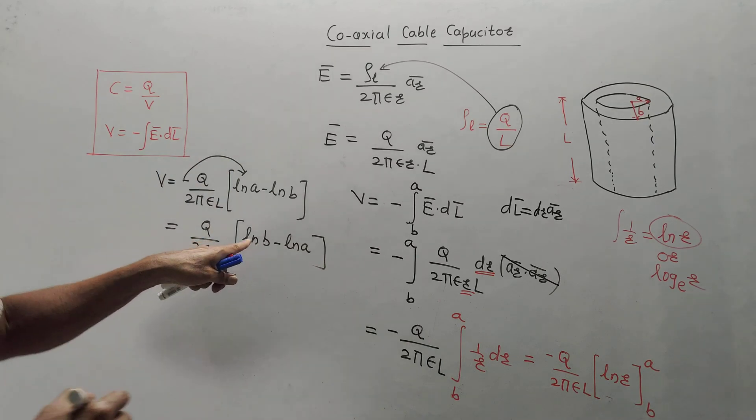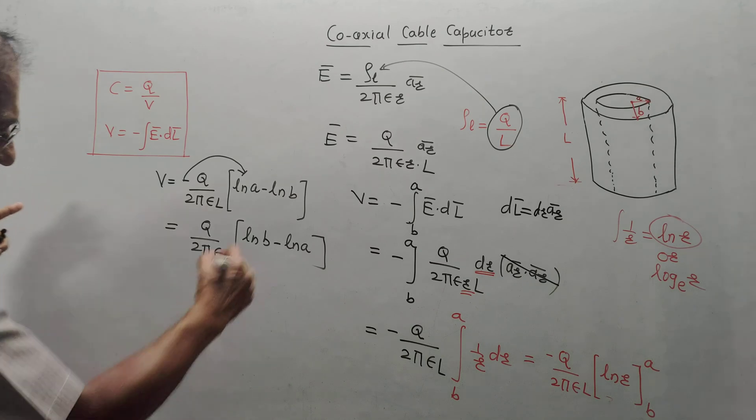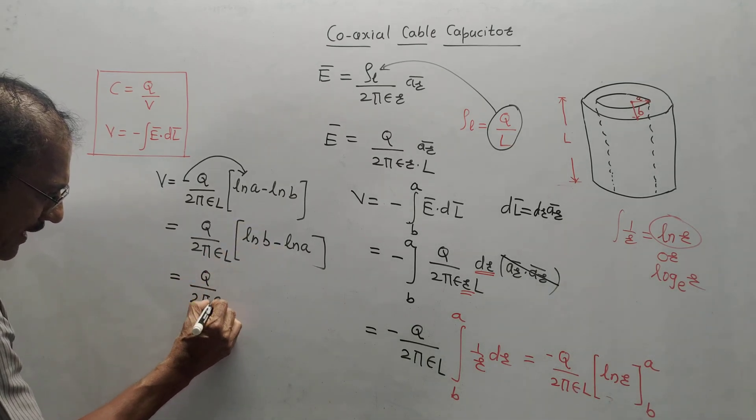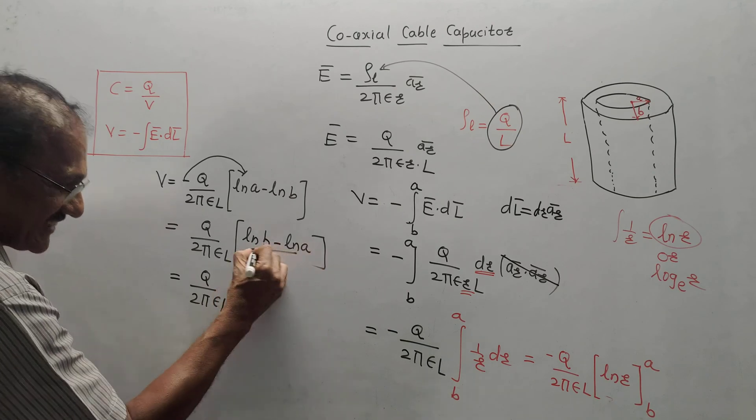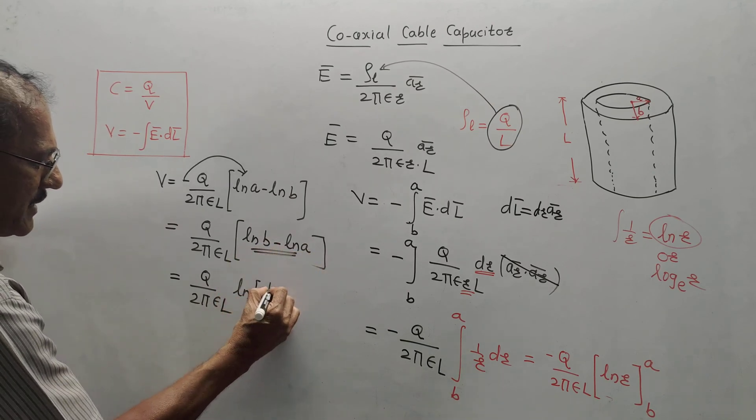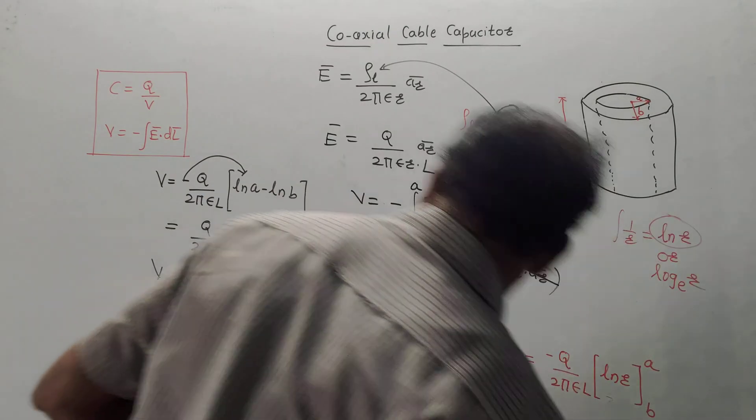Now, basic thing, if you have subtraction in terms of logarithms, then it becomes division. So, this can be written as Q by 2 pi epsilon L. Since it is a subtraction, it is written as L N B by A. This is the equation of voltage, that is V.